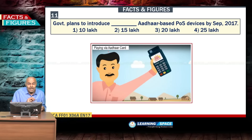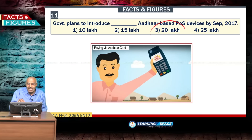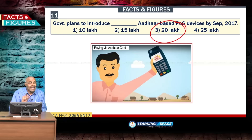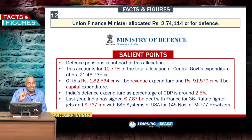The government plans to introduce 20 lakh Aadhaar-based POS devices by September 2017, which will work with Aadhaar as the base.